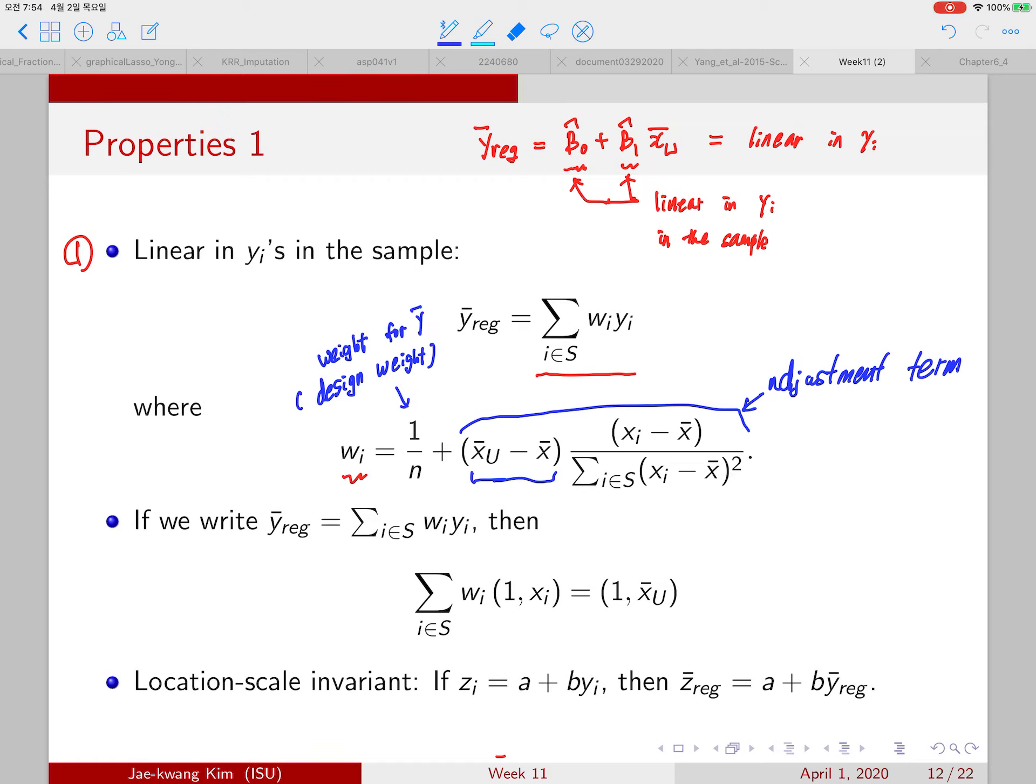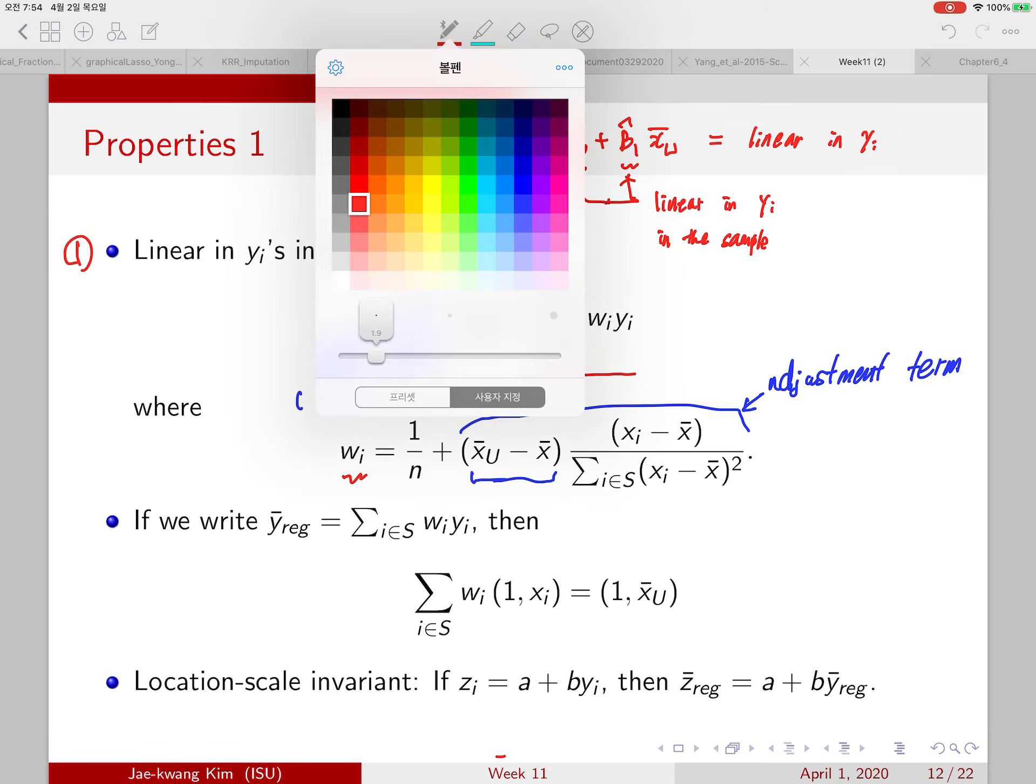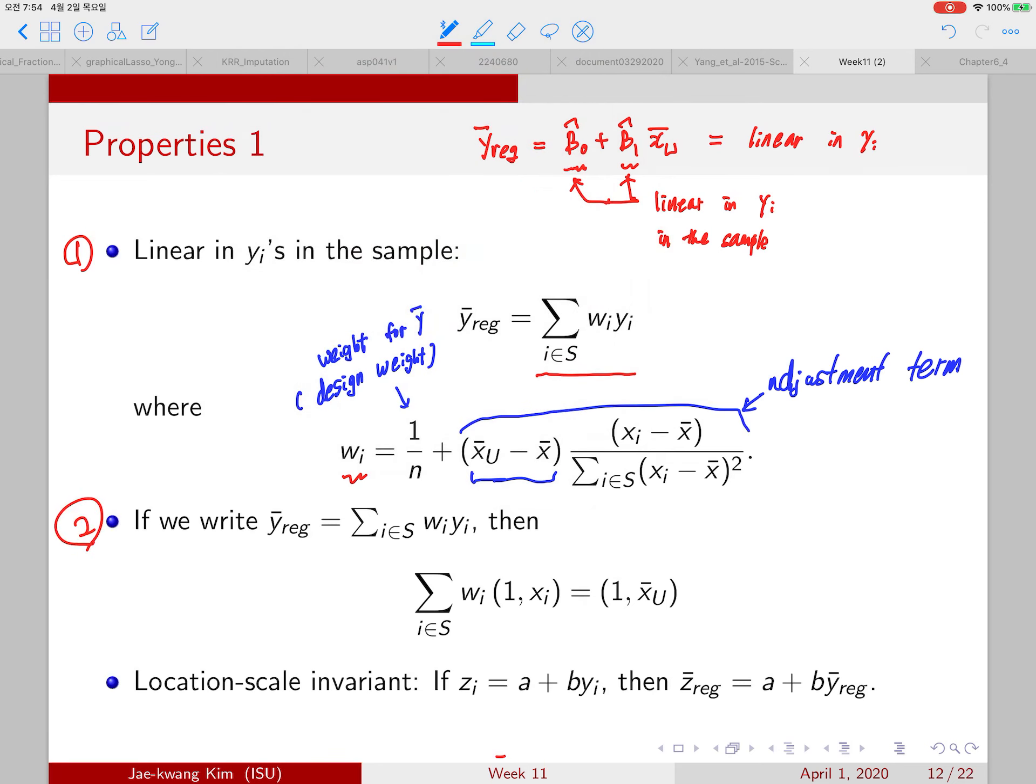And now let's take a look at this property, the second property. The second property is that the weights should add up to something. So this is some population mean, a population quantity. Previously, the ratio estimator also satisfied this. The weight applied to the ratio estimator reduced to the same population mean. But now regression estimator satisfies one more. It also gives the equal weight add up to equal to one.